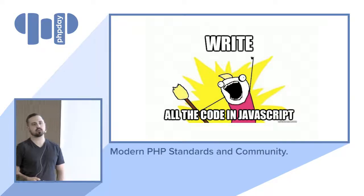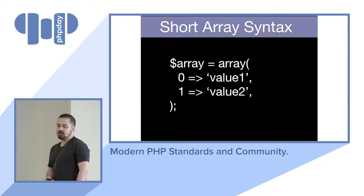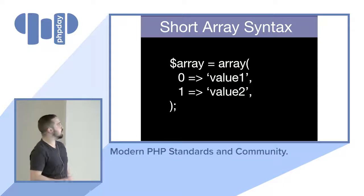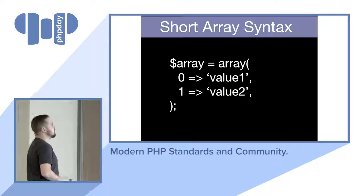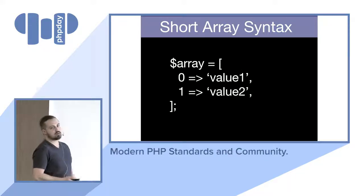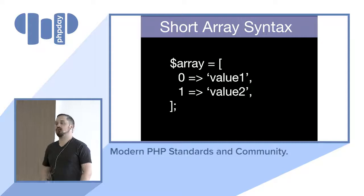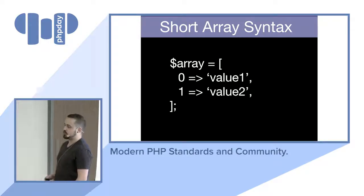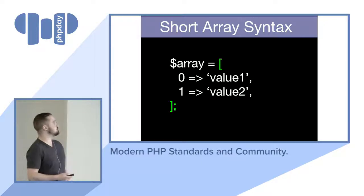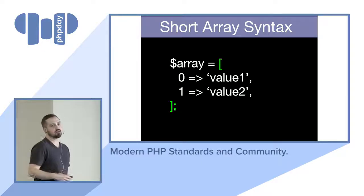Short array syntax is probably most familiar from JavaScript. In the past we wrote arrays like this: array equals array(0, 1, 'value'). Now there's a shorter way with just square brackets. It doesn't really add any other functionality except saving you keystrokes and making it a little cleaner to read.